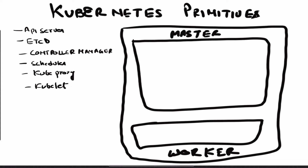Coming to Kubernetes primitives — in order to have a working cluster where you can deploy your containerized workloads, a list of components is required. The first is API server, then we have etcd, then controller manager, scheduler, kubeproxy, and kubelet. Kubeproxy and kubelet run on the worker node, and the rest run on the master node. Kubernetes uses a master and worker node architecture — you can have any number of worker nodes, and generally you go for an odd number of master nodes like three or five.